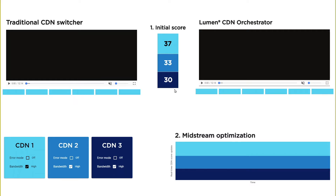Finally, the player on the right is using Lumen CDN Orchestrator. As with the other player, it will also start the session with the highest scoring CDN from the CDN score provider. For the purpose of this demo, we'll assume that the video platform is using three CDNs, which are identified by color and number.